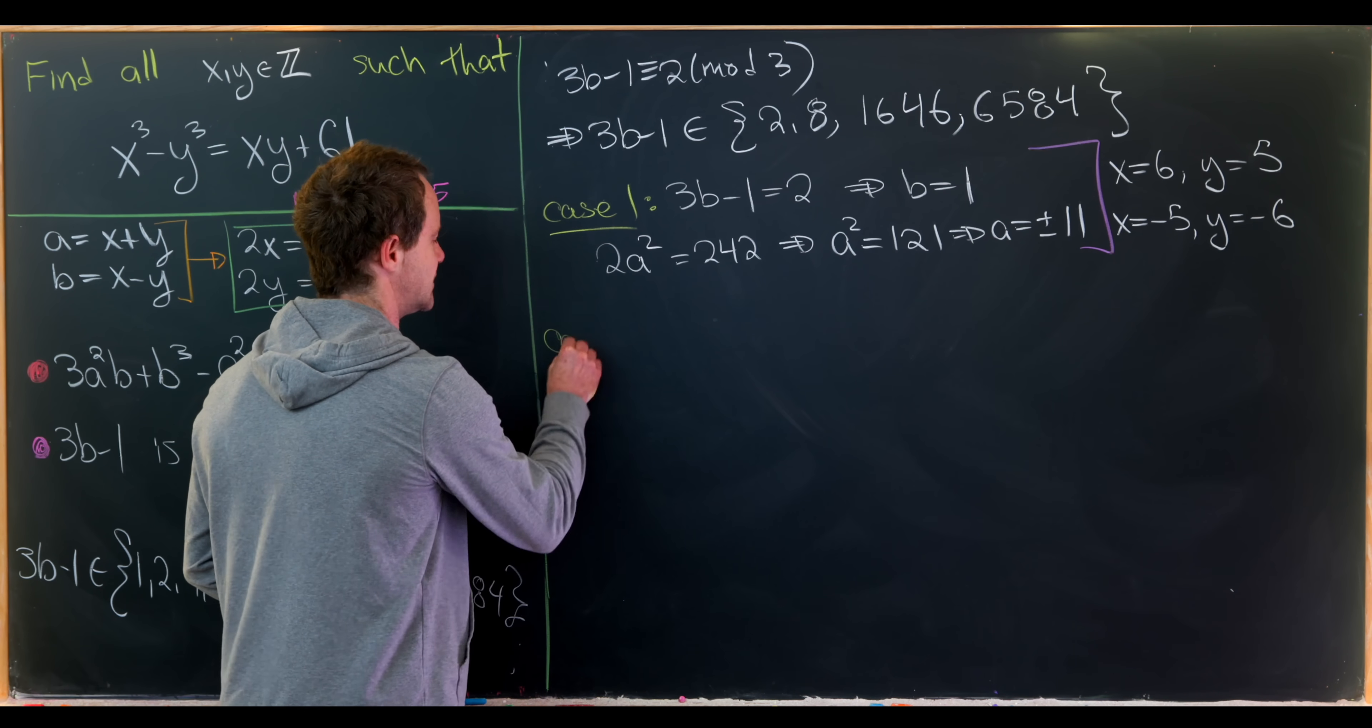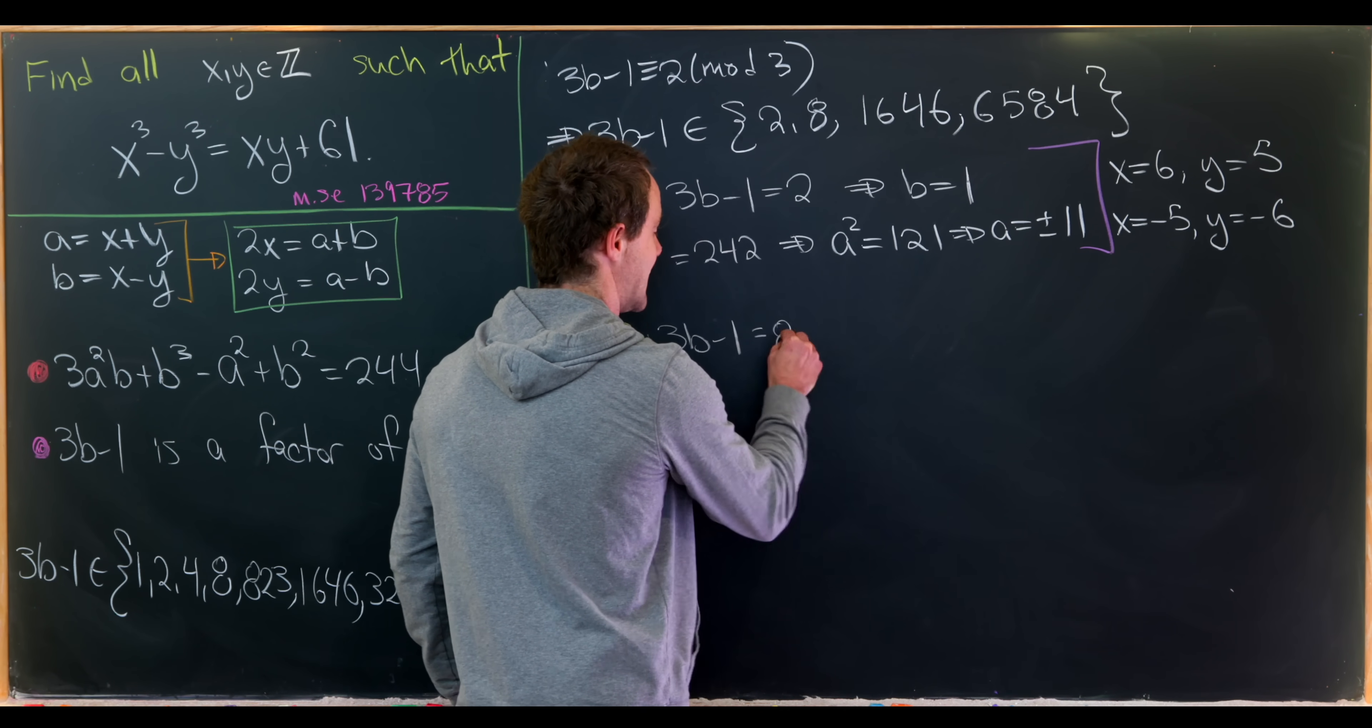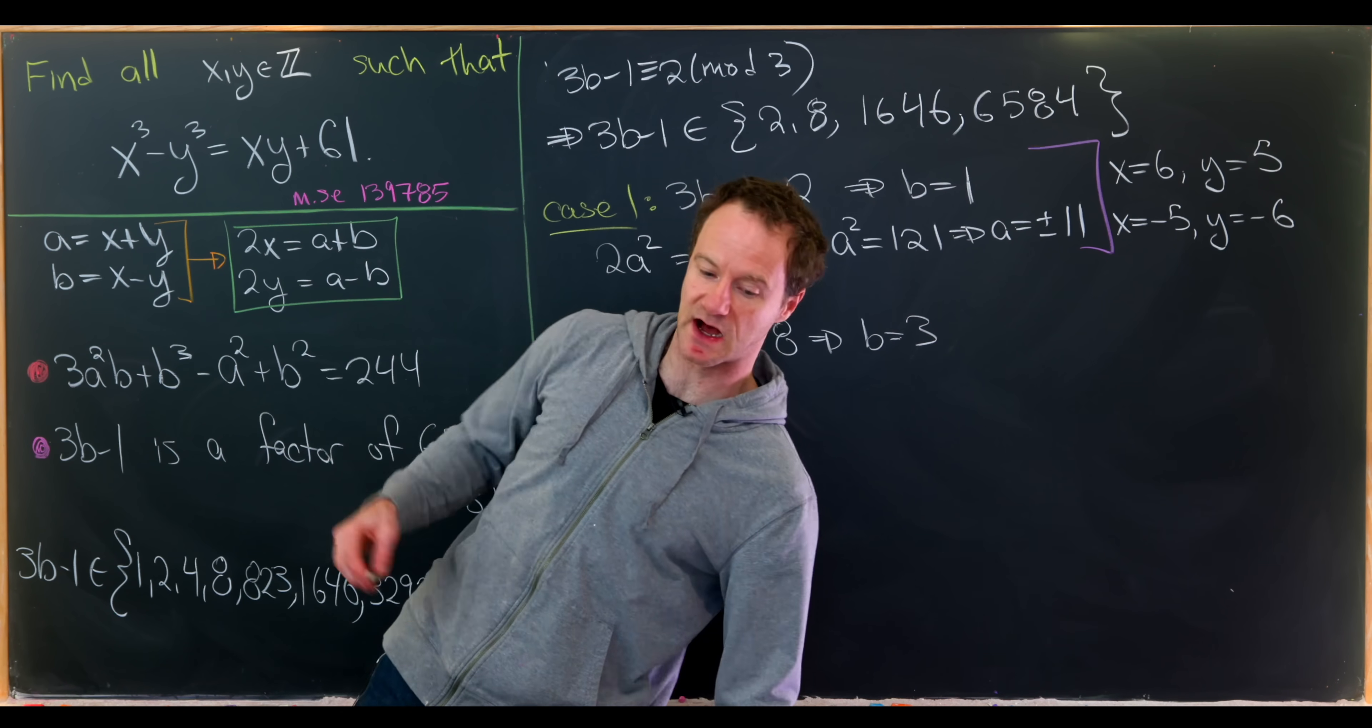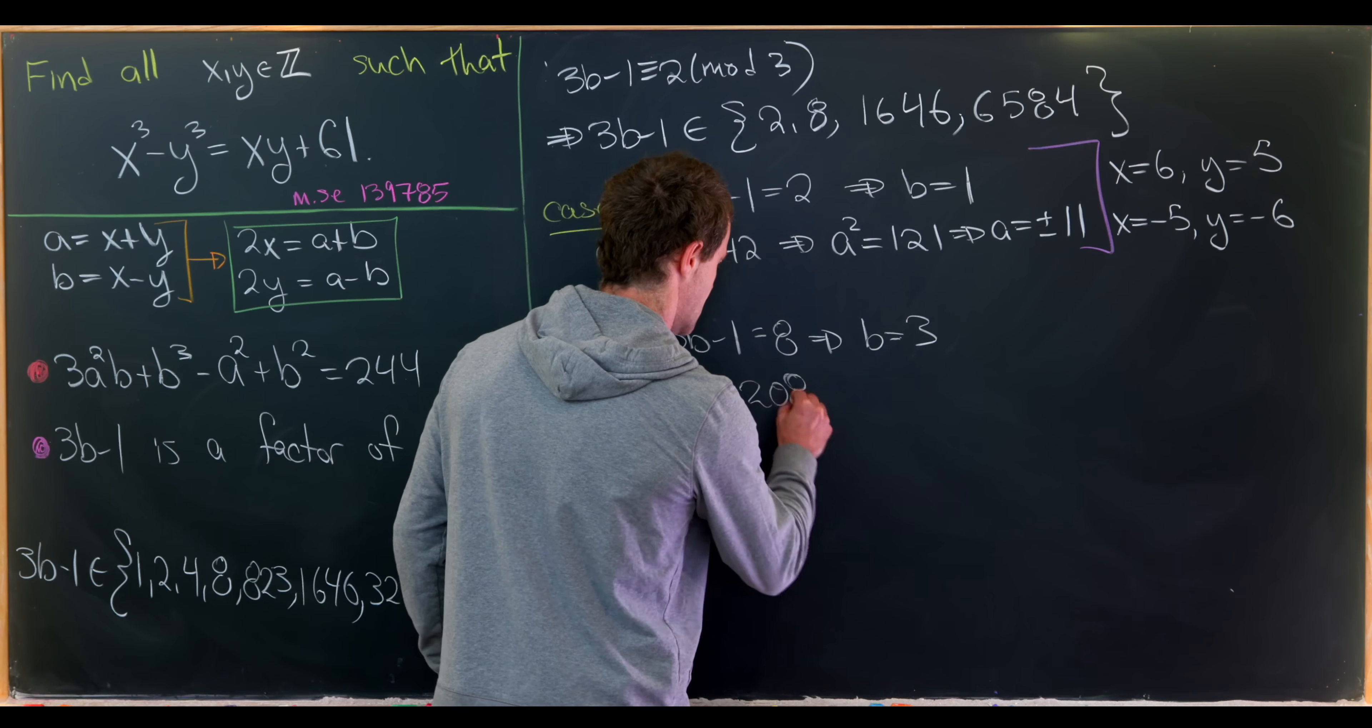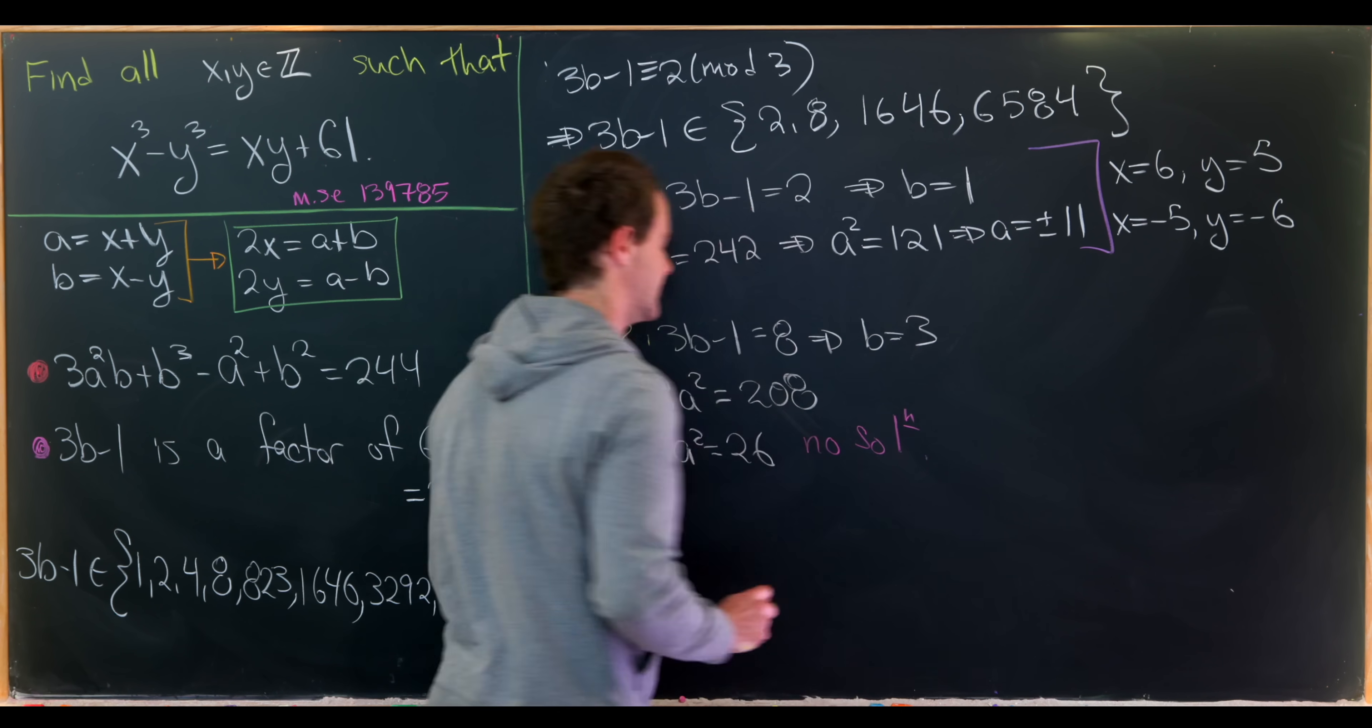Now let's move on to case 2. Just to reiterate, we did just get a solution over there - we've got two solutions. Case 2 will be 3b minus 1 equals 8, but that means that b equals 3. If we plug that into our equation we end up with 8a squared equals 208, but that means a squared equals 26. But 26 is not a perfect square, so that means there's in fact no solution here over the integers.